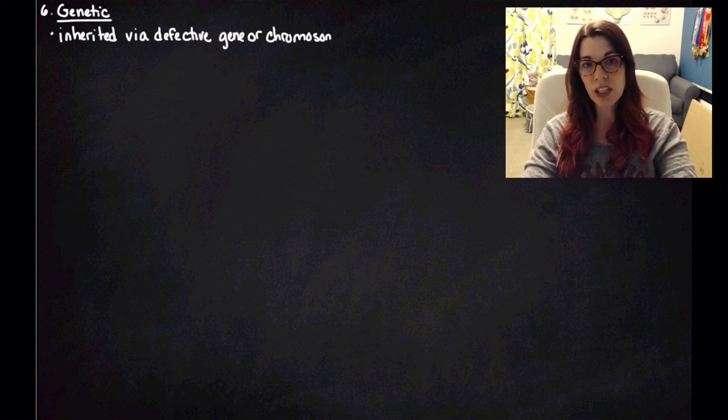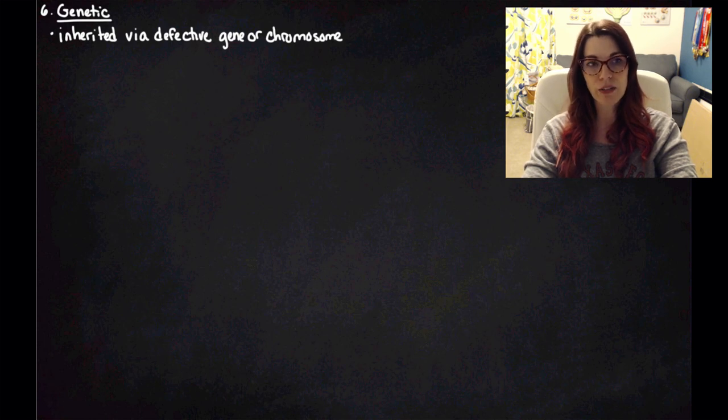And number six is going to be a genetic cause of disease. So a genetic cause of disease is just going to be inherited via defective gene or a defective chromosome.